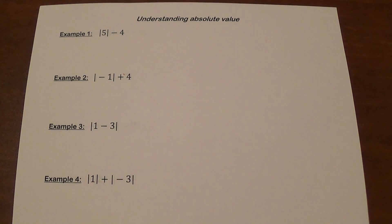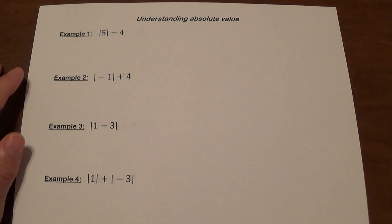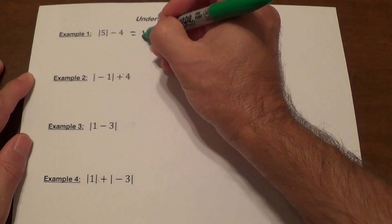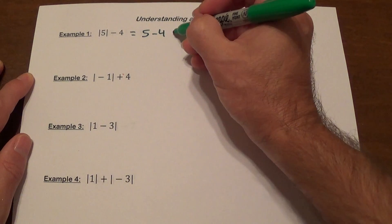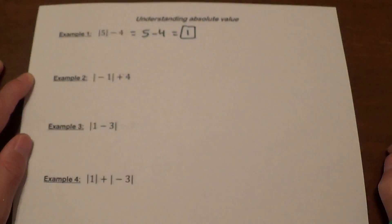Let's take a look at some problems. When you have multiple operations, you will treat absolute value as something that must be done first. In example 1, for the absolute value of 5 minus 4, you do the absolute value of 5 first, which is 5, then minus 4, giving us 1.